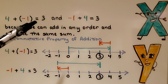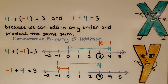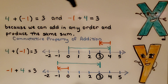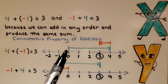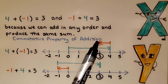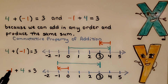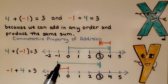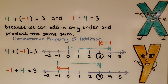4 plus negative 1 is equal to 3, and negative 1 plus 4 is also equal to 3 — we switched the addends around. For positive 4 plus negative 1: we draw our arrow going from 0 to 4, then for the negative 1 we start at 4 and draw it back to the left one unit, bringing us to positive 3. For negative 1 plus 4: we start at 0, draw an arrow to negative 1, then draw an arrow going to the right 4 units, landing at 3. The commutative property says we'll get the same sum regardless of order.